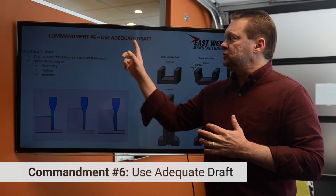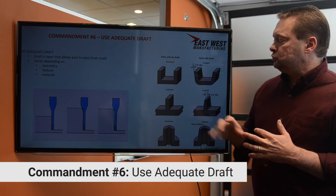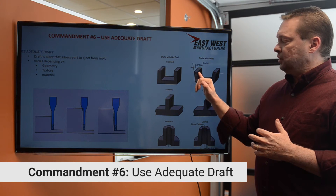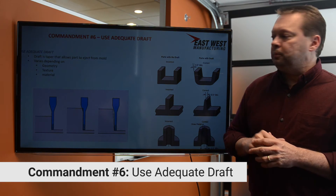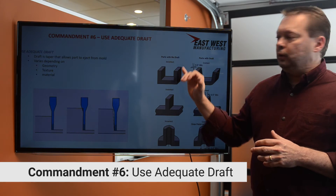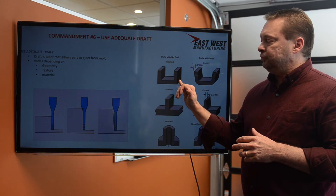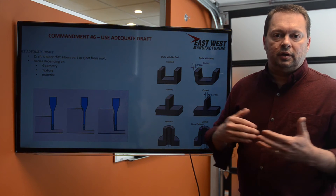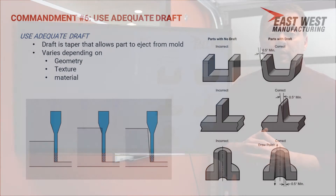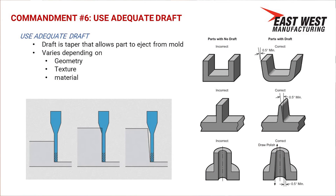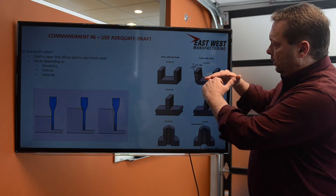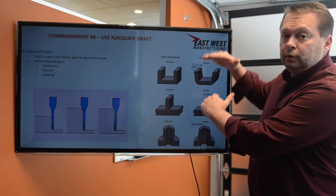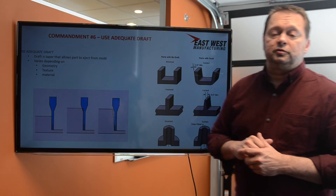Commandment number six is to use adequate draft on injection molded parts. Draft is the taper on selected surfaces inside or on an injection molded part so it can eject from the mold. Without draft, the steel on either side of these surfaces when the mold opens would drag across those surfaces, causing unsightly marks on the part and potentially ruining the mold. We put taper or draft — at least a half a degree or so — on surfaces in the direction of pull so that we can properly eject parts from the mold.